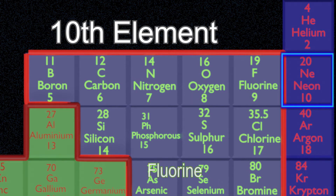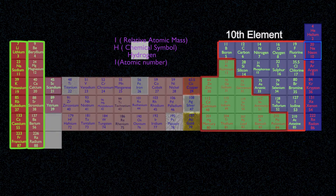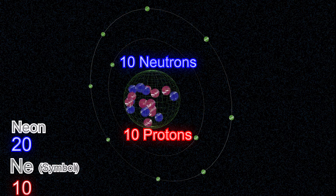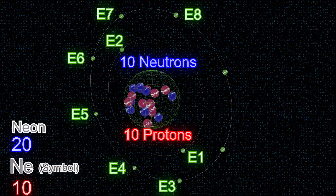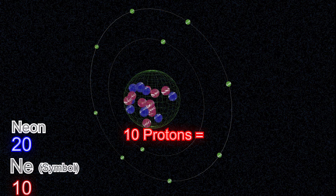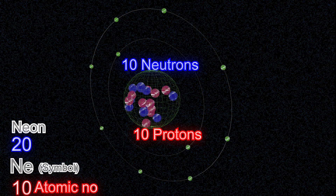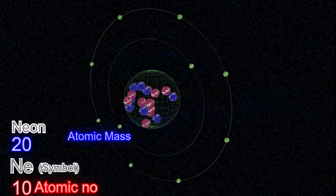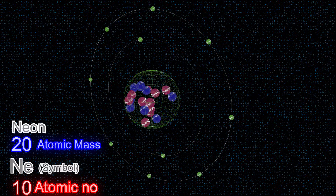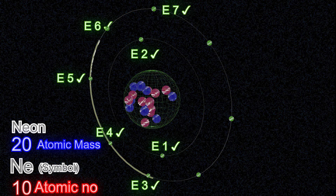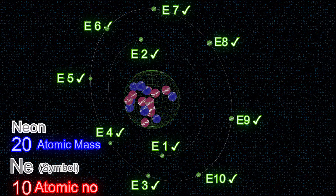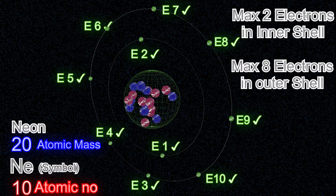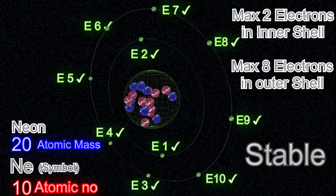Neon is the tenth element in the periodic table. The neon atom has ten protons, ten neutrons, and ten electrons. Ten protons mean its atomic number is 10. Ten protons and ten neutrons mean its atomic mass is 20. Two electrons are in the inner shell and eight electrons are in the outer shell. The inner shell and outer shell both are full with the maximum number of electrons they need. So neon atom is already in a stable state. It does not want to participate in any reaction, as it does not want to lose or gain any electron at all. That is why neon is an inert gas.